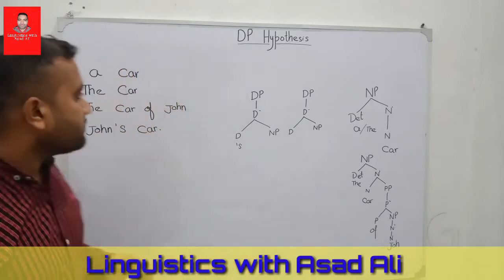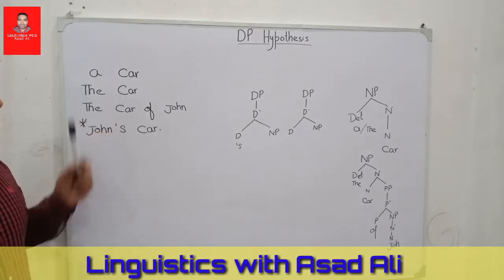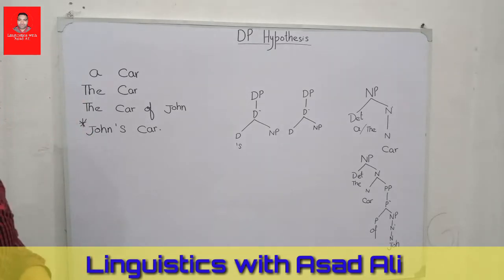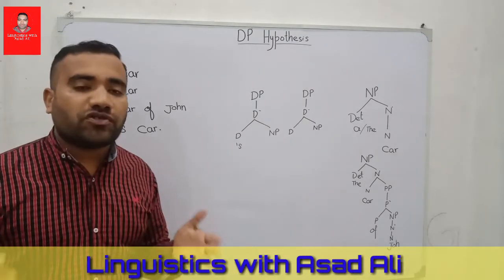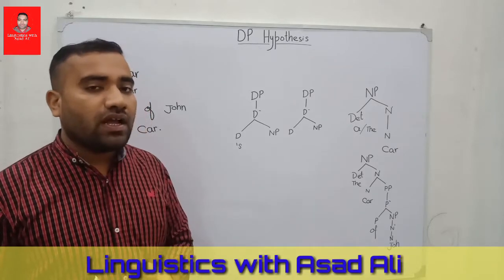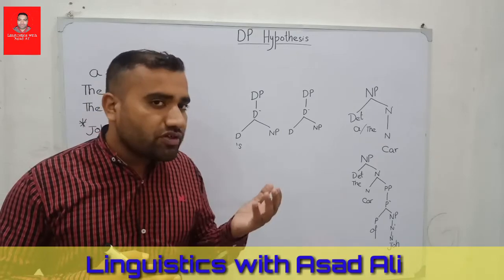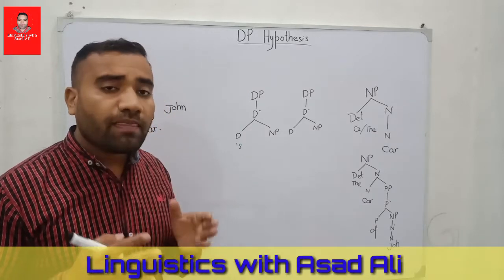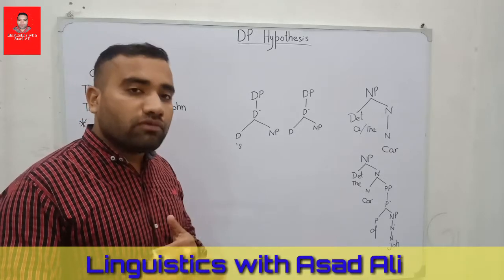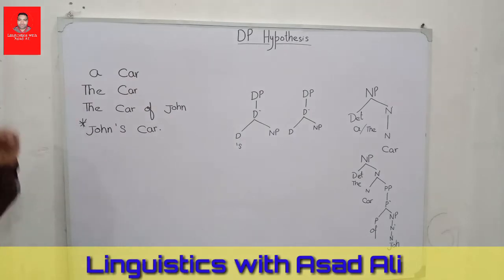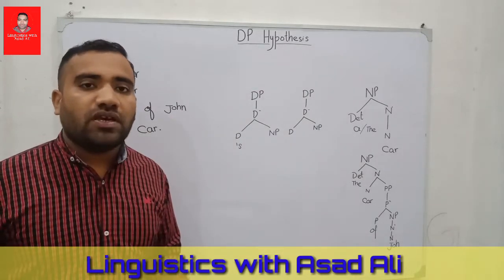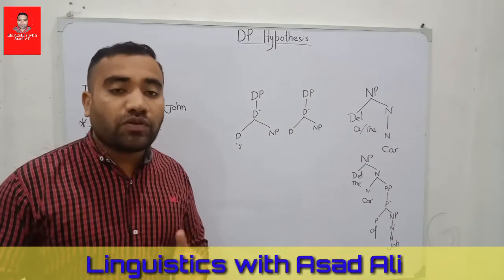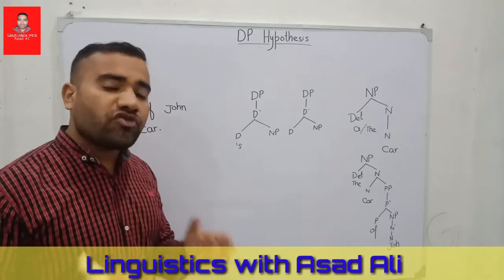First of all, consider the examples: 'a car', 'the car', 'the car of John', and 'John's car'. We have these examples and we examine the structure of NP — noun phrase — to see whether that structure fulfills all the requirements of this data or not. The structure of NP can only fulfill the first three examples; the structure of NP is unable to describe the last example. This is our core point in this video.